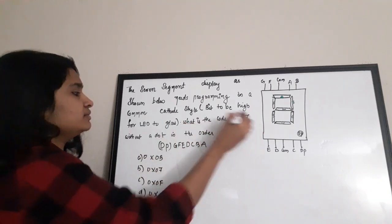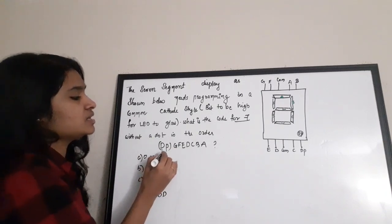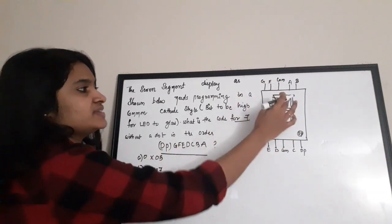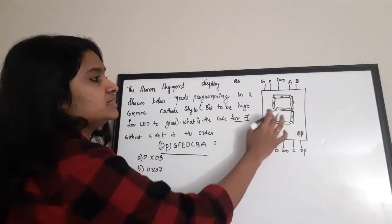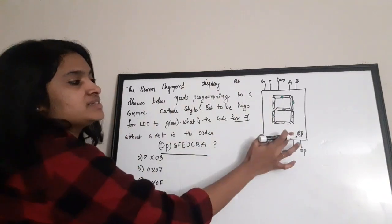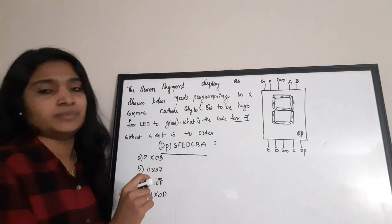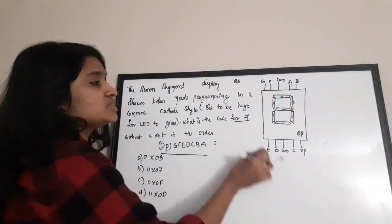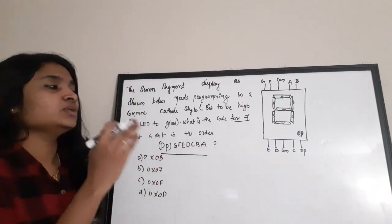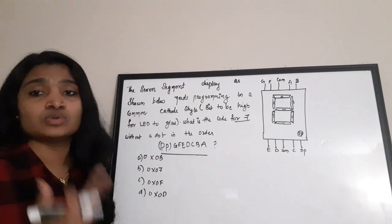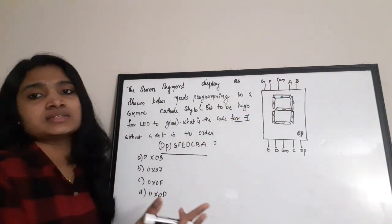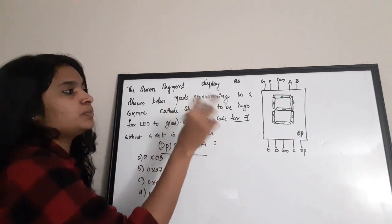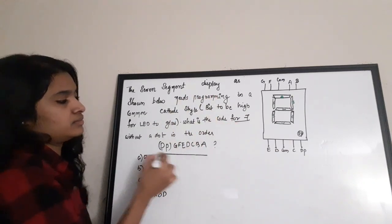The question is: what is the code for '7' without a dot, in the given bit order? This 7-segment display has various segments: a, b, c, d, e, f, g, and also a decimal point represented as dp. You have to connect wires to these terminals to get a particular segment or LED to glow. This is the order of the bits for all the segments.